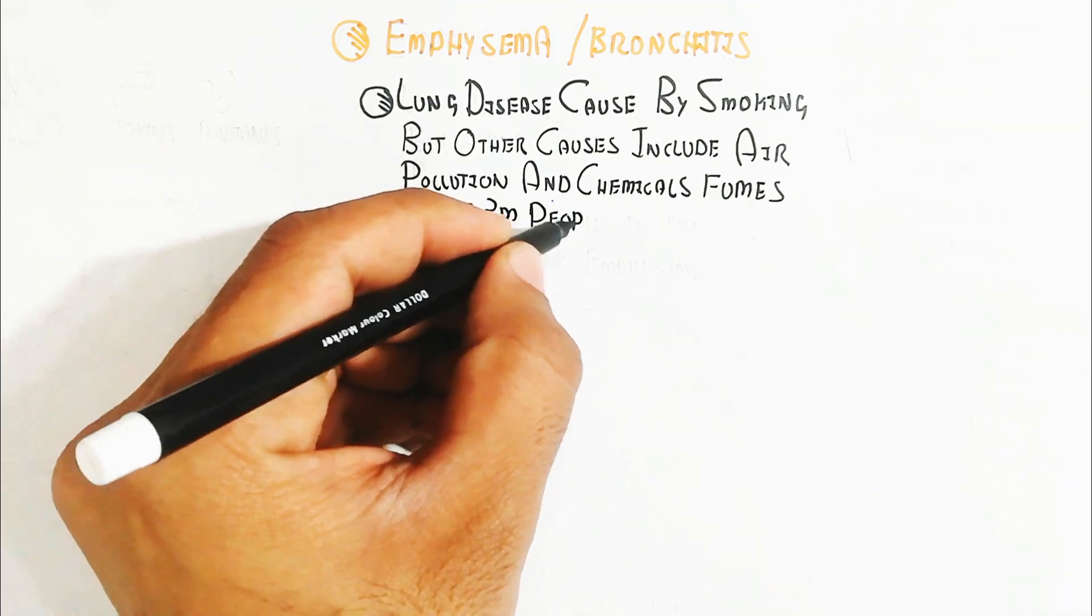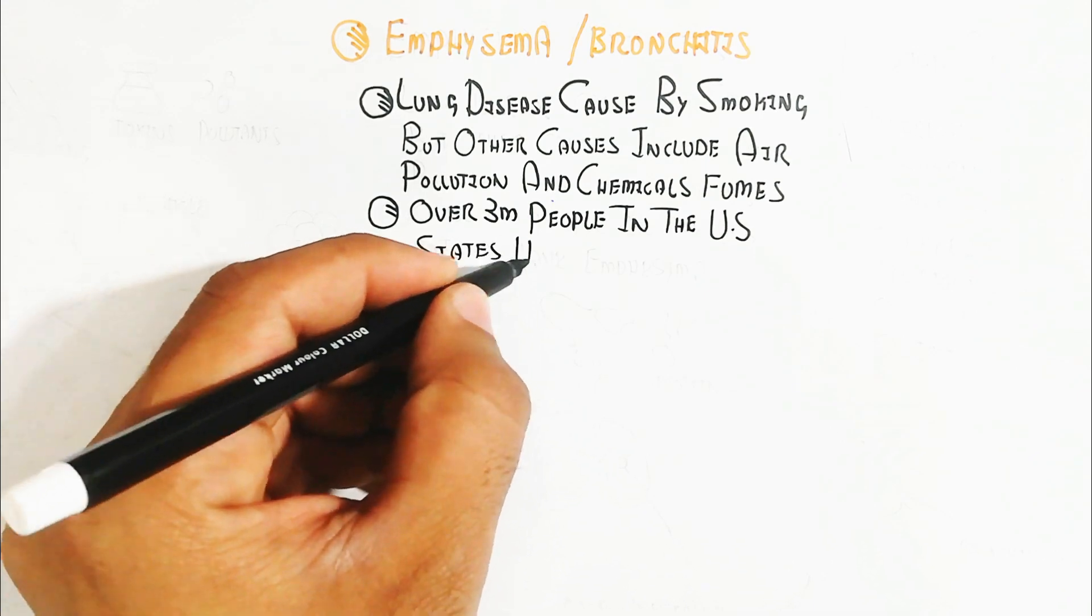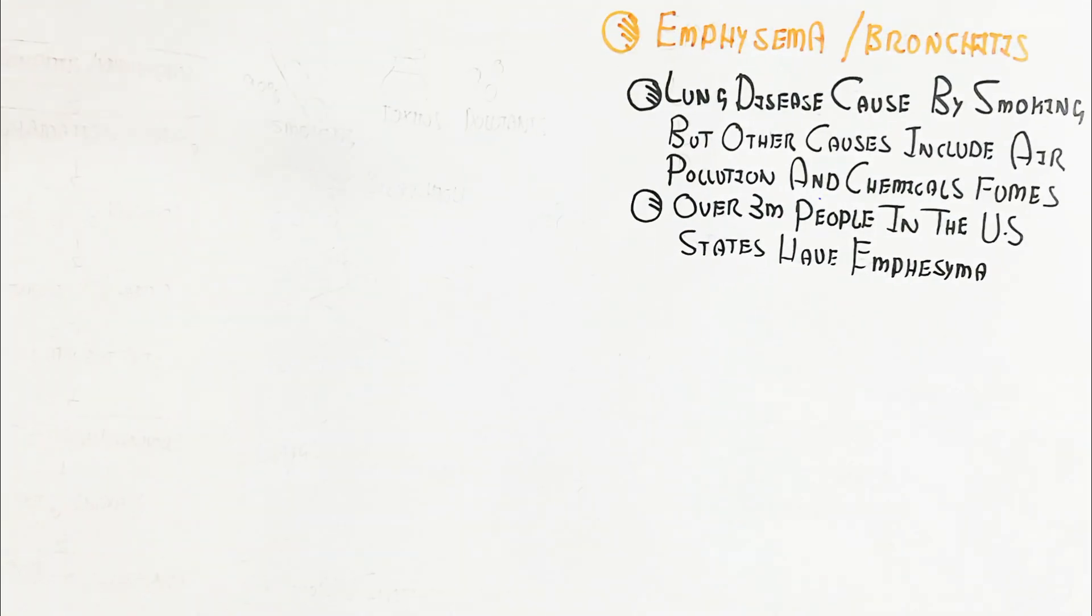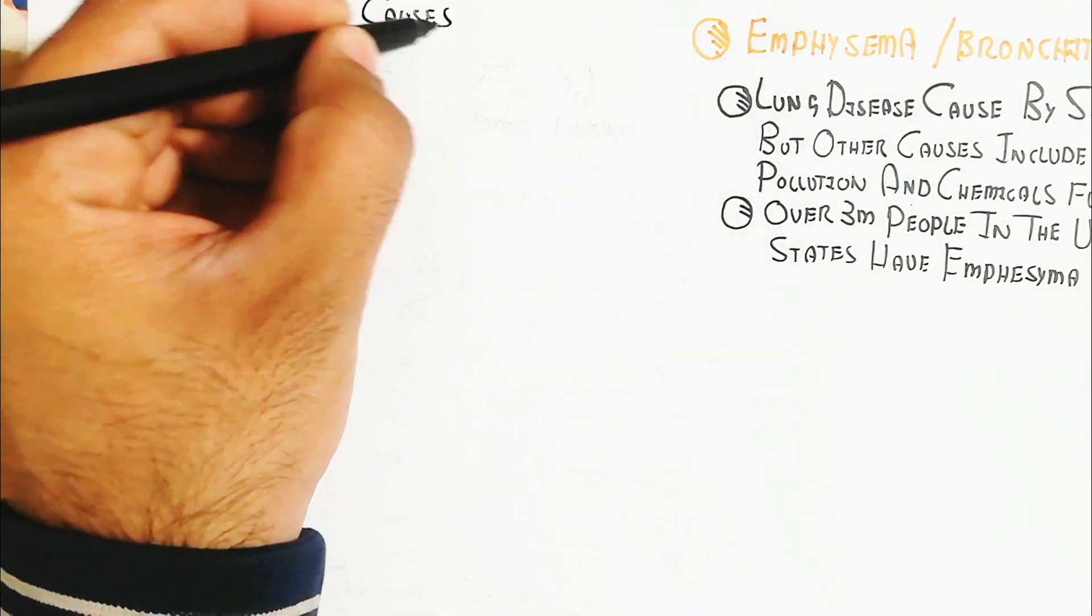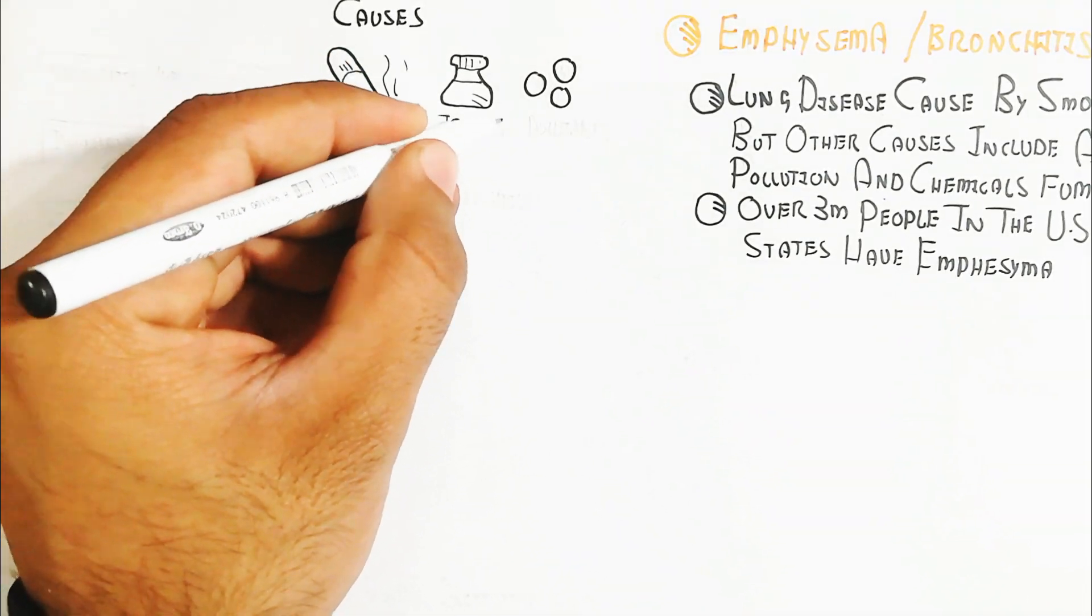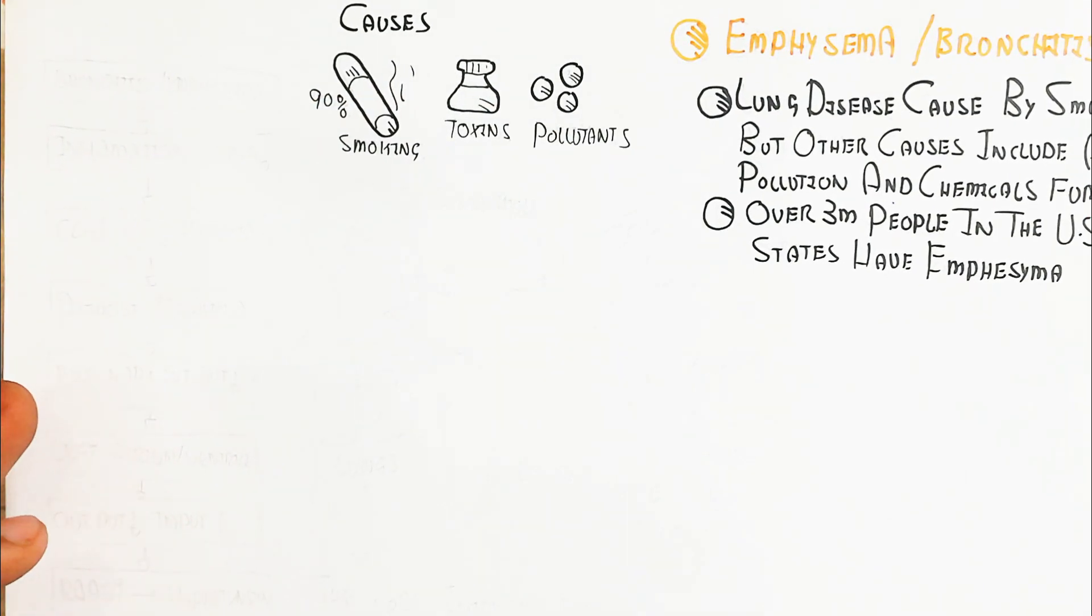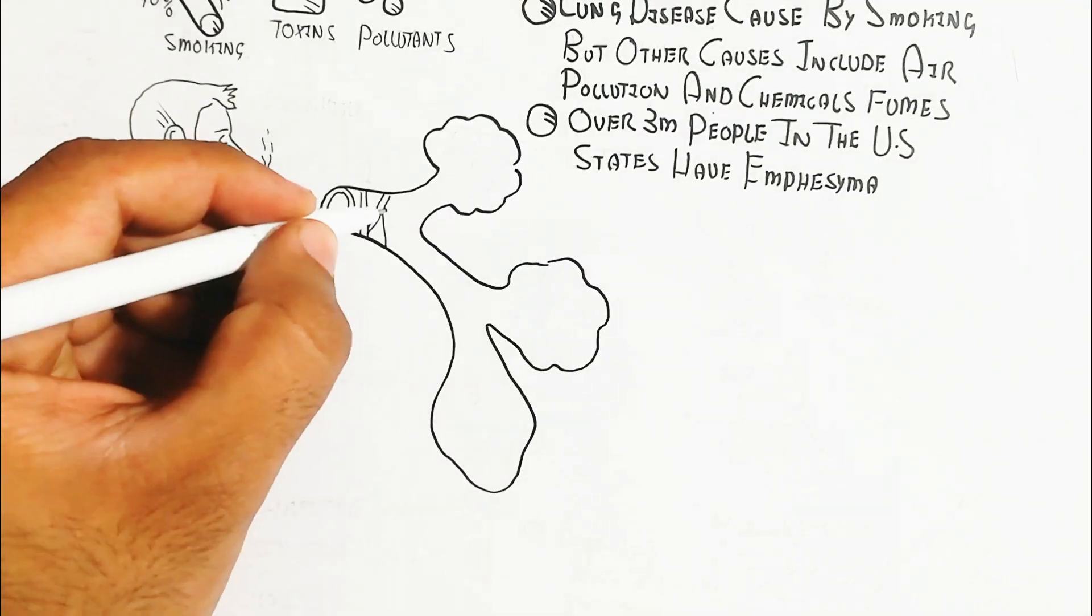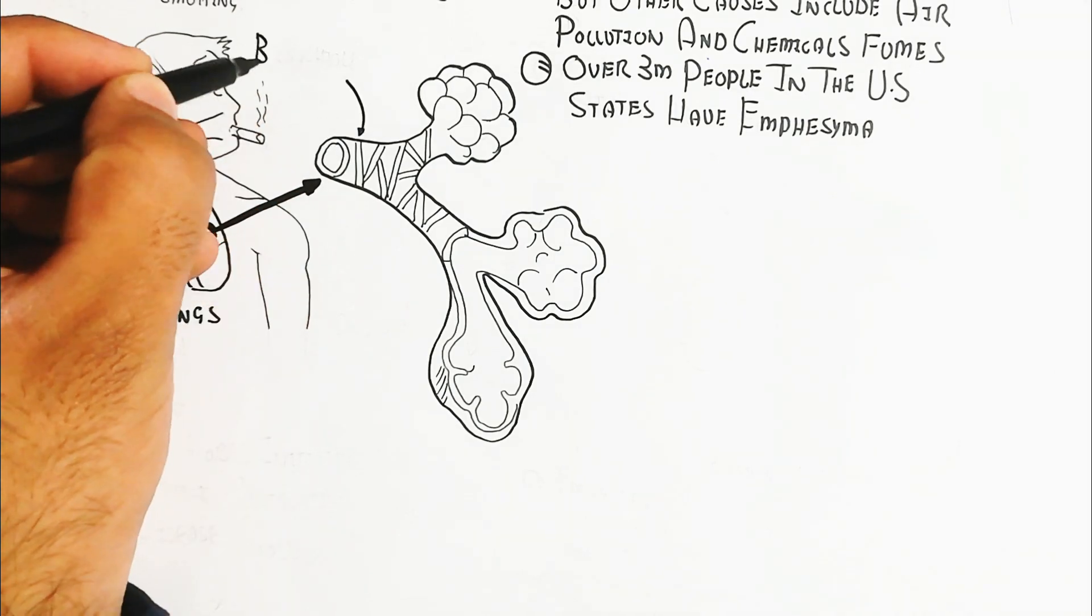The causes are 90% smoking and 10% toxins and pollutants. When a person smokes, it leads to bronchitis and bronchoconstriction will occur.